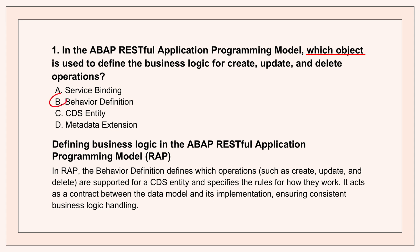The behavior definition tells the RAP framework which operations are allowed for your specific data model piece, and just as crucially, it defines the rules for how those operations work — like what validation needs to happen. It's like the rule book for that entity. It centralizes that logic, which is a huge step up for consistency and maintainability compared to scattering code everywhere.